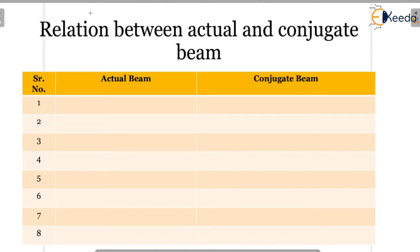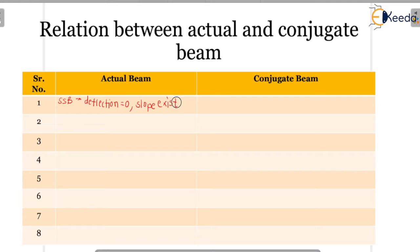In previous classes we discussed simply supported beams. Now let's see the relation between an actual beam and its corresponding conjugate beam for different end conditions. For a simply supported or roller supported end, deflection is zero but slope exists. For the conjugate beam at a simply supported end, bending moment is zero but shear force exists.